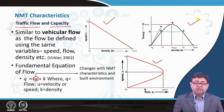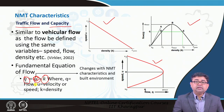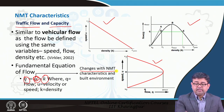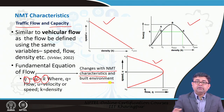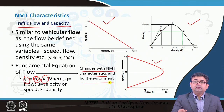The basic traffic flow equation states that flow q is the product of speed u and density k. So the basic equation is: q = u × k. The speed will vary as per the NMT mode, its characteristics, and the built environment. We will now look further into what elements affect the speed of pedestrians specifically, and in the coming lecture we will explain these three diagrams in much more detail.